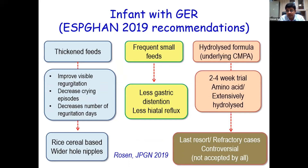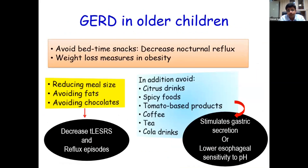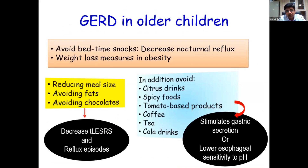A trial of an amino acid or extensively hydrolyzed formula can be given for possible cow's milk protein allergy. For GERD in older children, avoid bedtime snacks as it causes nocturnal reflux. Weight loss measures in obesity, small meals, and avoiding fats and chocolates are advised, as these can lead to early lower esophageal sphincter relaxation.